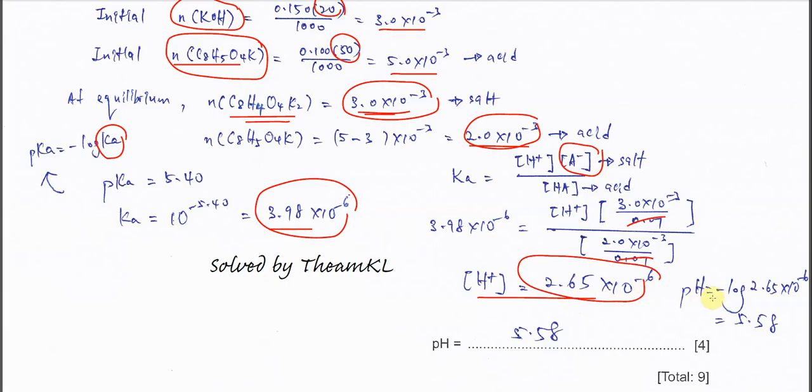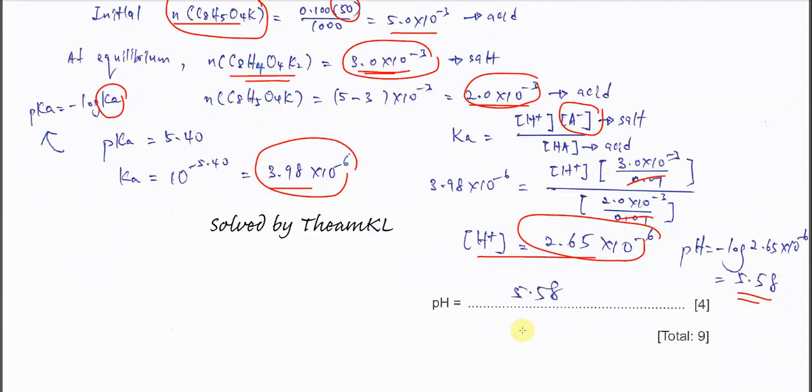After that, rearrange. You get the concentration of H+ is 2.65 times 10 to the negative 6. Negative log this, you get the pH, which is 5.58. That's all for this question. Thank you.